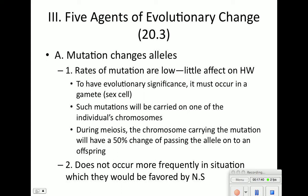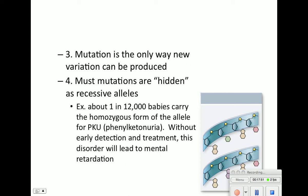Mutations do not occur more frequently in situations that would be favored by natural selection. Mutation is the only way to produce new variation, so mutations must be hidden as recessive alleles. PKU is an example — one in 12,000 babies carry this homozygous form of the allele. Without early detection and treatment, this disorder will lead to mental retardation. You'll see on gum it says 'contains phenylalanine' — it has a sugar that PKU individuals cannot metabolize, affecting brain development. Treatment is simply changing your diet to avoid that sugar.